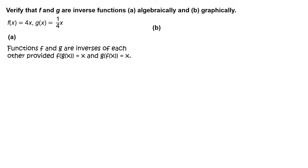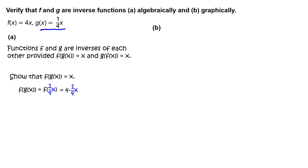Part a. Functions f and g are inverses of each other, provided f of g of x equals x and g of f of x equals x. First, show that f of g of x equals x. Write f of g of x equals f of 1 fourth x, which equals 4 times 1 fourth x, which in fact equals x.